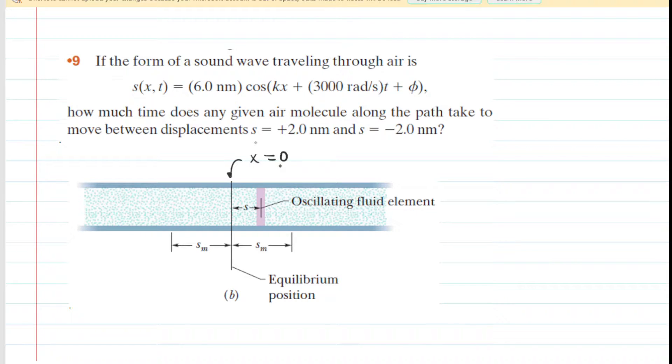Now you could choose any value for x, but it turns out that it's much easier to use x equals 0, and that is because this term kx right here, if we plug 0 in for x, will drop out. So we can actually simplify the equation of the sound wave.